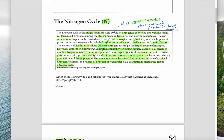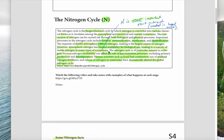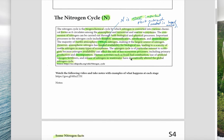The air we breathe is actually 78% nitrogen, so there's an enormous amount of nitrogen in the atmosphere and in the soil, and it needs to cycle between those two places. However, atmospheric nitrogen has limited availability for biological use, leading to a scarcity of usable nitrogen in many ecosystems. Plants cannot access nitrogen gas directly — it has to be turned into usable forms in the soil by bacteria in the soil and in plant nodules. So the nitrogen cycle is super important.